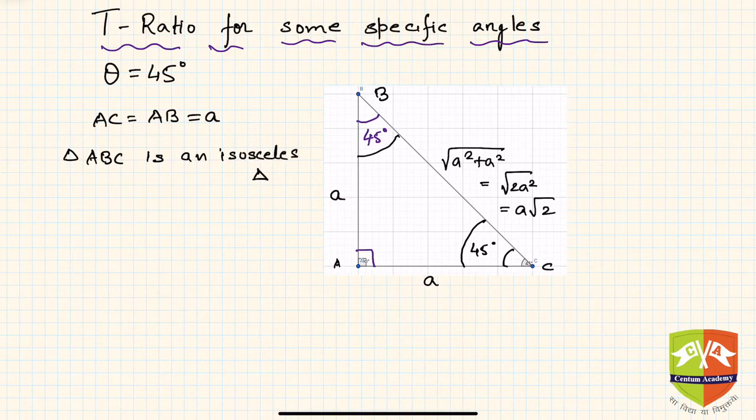Because of this, the sides opposite to the equal angles will also be equal. Hence if AC is a, AB will also be a.